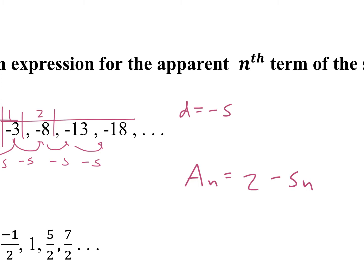You can always check your work by taking the third term. We can plug in 3 here for n and we should get negative 13. You can do it with the fourth term too — plugging in 4 should get negative 18.